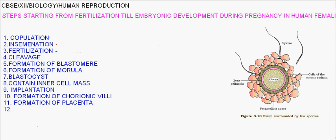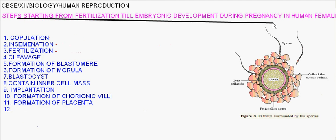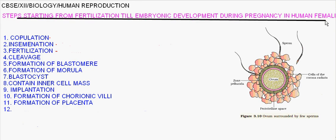This is about steps starting from fertilization till embryonic development during pregnancy in a human female. The steps are: first step is copulation, second step is insemination, third step is fertilization.